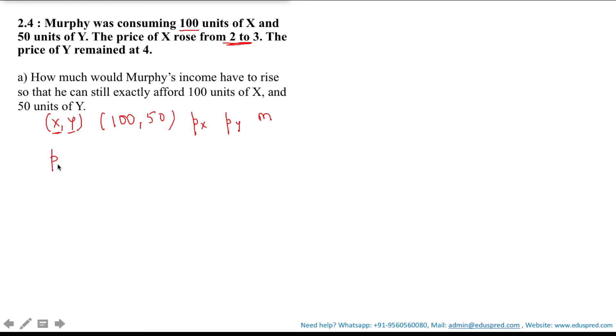Let PX represents the initial price which is 2 and PX prime represent the new price which is 3 and we are also given that the price of good Y is 4. There is no change in the price of good Y so that would be only PY is equal to 4.